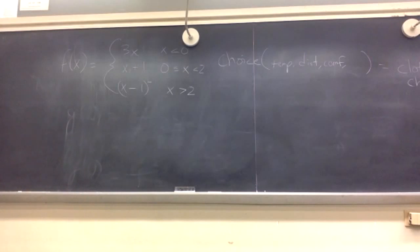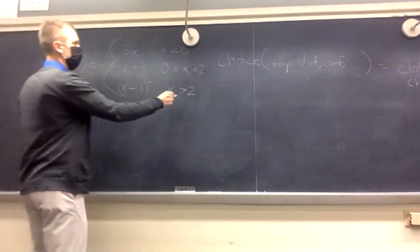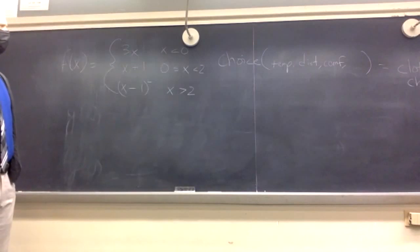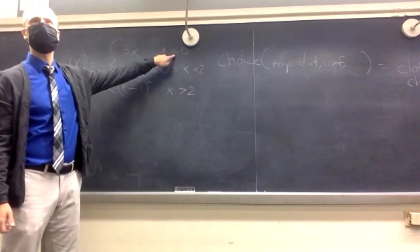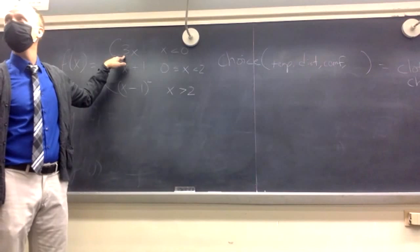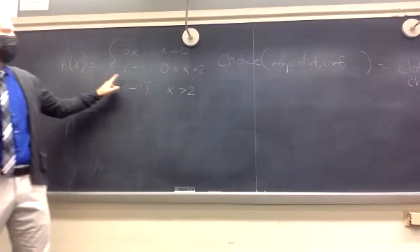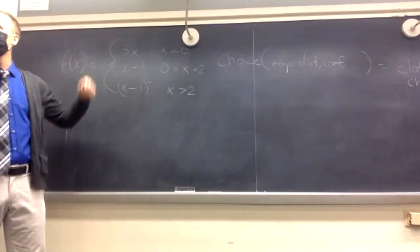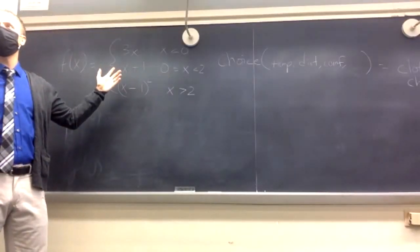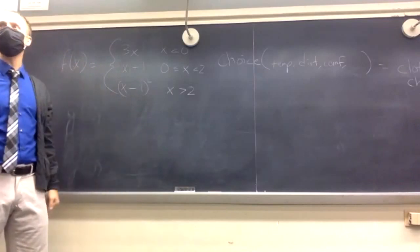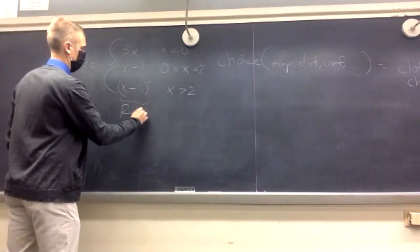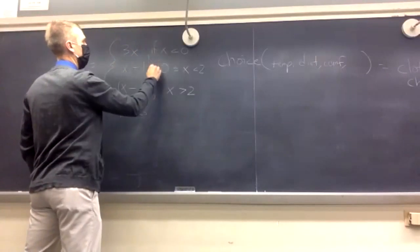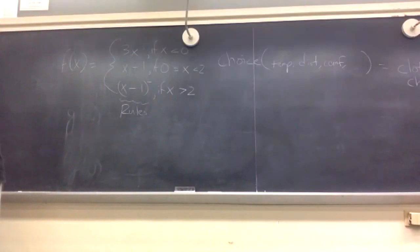Each piece has a specific criterion for the input. If you input a negative number, this is the thing you do — you multiply it by 3. If you input a number bigger than 2, this is what you do — you subtract 1 and then square it. If you input something between 0 and 2, this is the rule — you just add 1. So piecewise functions give you the rules and then they give you the criteria. Sometimes there are commas separating these things, sometimes you'll see the word 'if' or 'when', and sometimes it'll be written with just space separating them, like in your book.